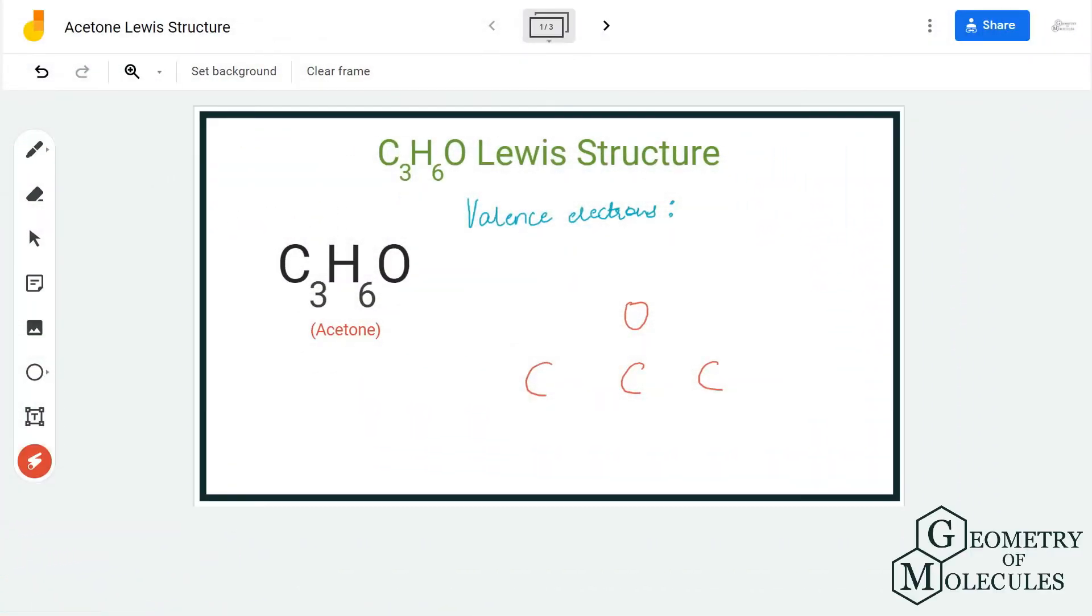Hi guys, welcome back to our channel. In today's video we are going to determine the Lewis structure for acetone. To start with, you should know that it has a functional group where a carbon atom has a double bond with oxygen, and this actually makes it easier to draw the Lewis structure for any ketone.